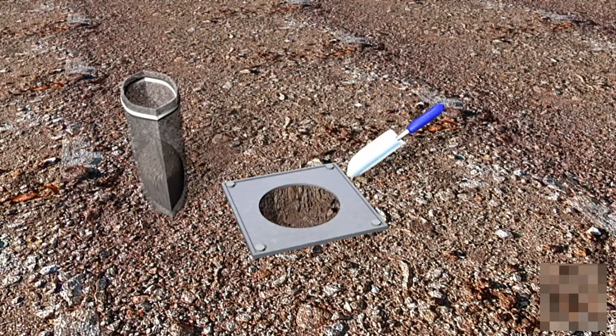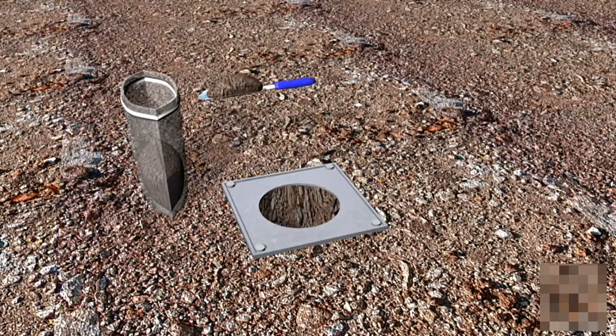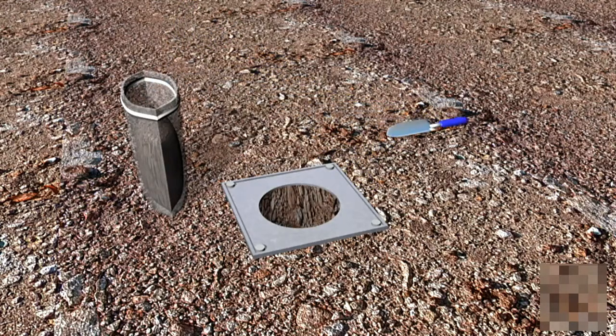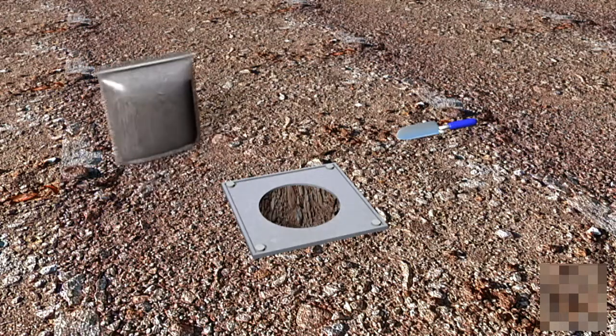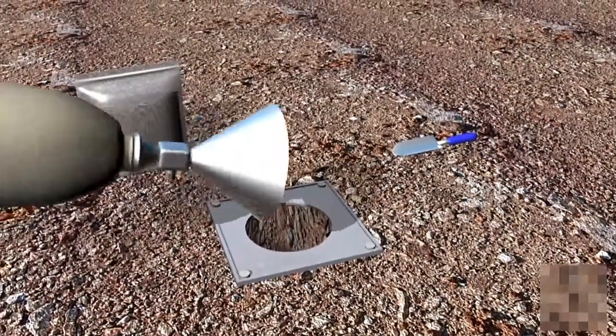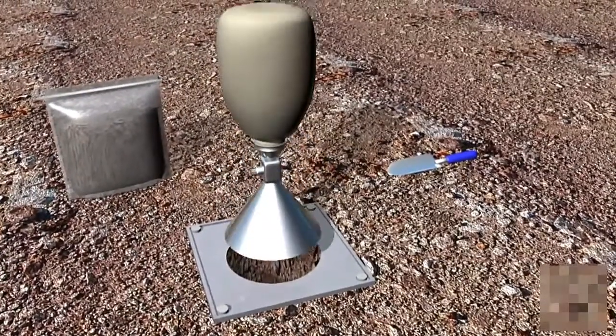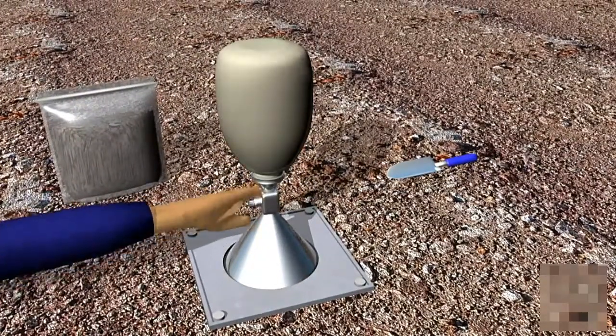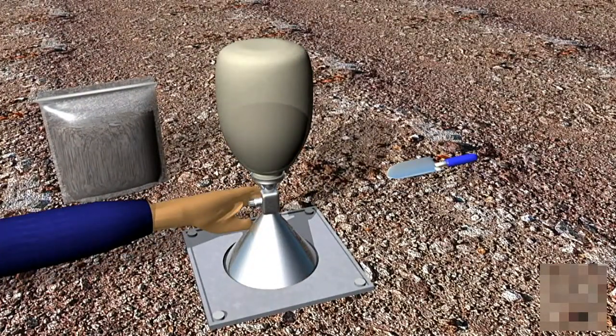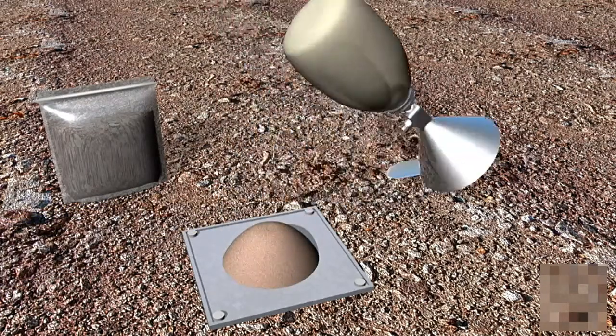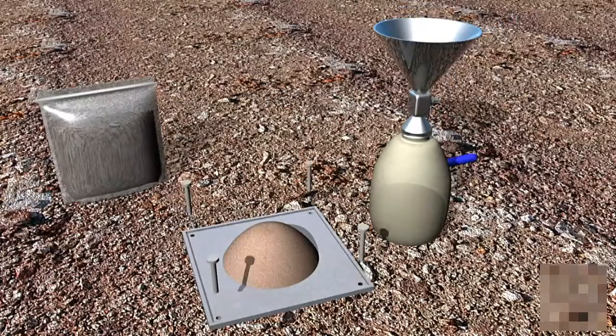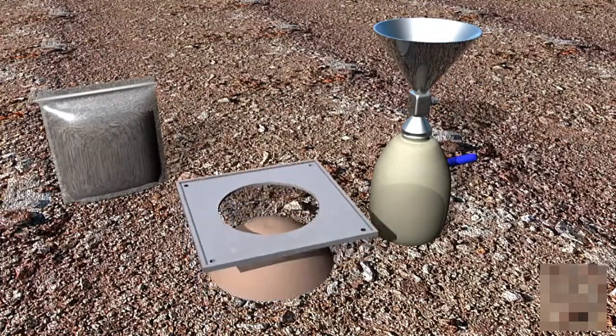With the valve closed, turn the bottle and cone assembly upside down and place the cone in the center hole of the base plate and open the valve so that sand flows. After flow of sand stops, close the valve and pick the assembly up. The sand in the cone will be poured into the base plate.